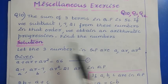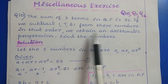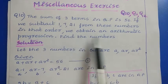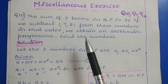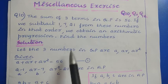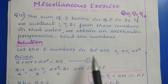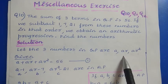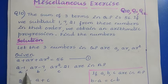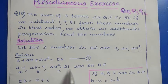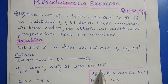The given condition is A plus AR plus AR squared is equal to 56. If we subtract 1, 7, 21 from these numbers in that order, we obtain an arithmetic progression. That means A minus 1, AR minus 7, AR squared minus 21 — these 3 values are in arithmetic progression.